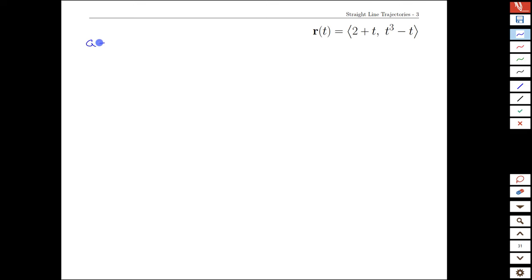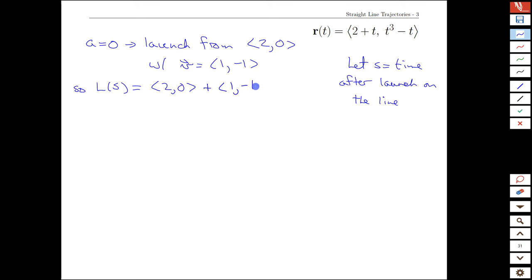Let's just investigate a little further though. We're going to see a little bit of a wrinkle with the physics. So when we take the a=0 point, then our launch is from the point (2, 0), with velocity equal to (1, -1). And so our trajectory afterwards, I'm actually going to change the name here. Let's use s here as equal to the time after launch on the line. And that's going to be (2, 0) plus the velocity times time, (1, -1) times s.